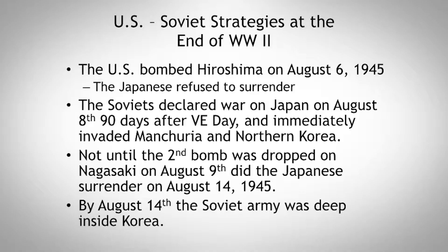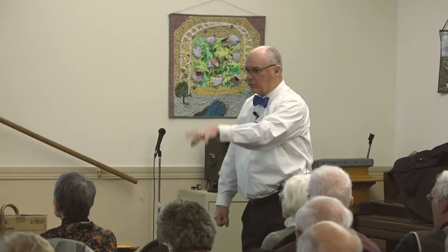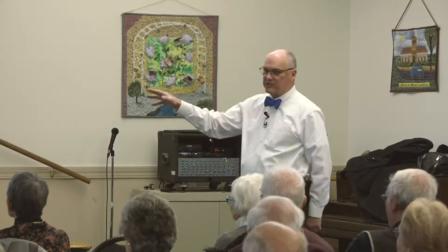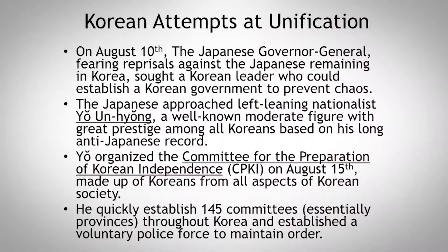U.S.-Soviet strategies: the U.S. bombed Hiroshima on August 6th, 1945. Japan did not surrender as quickly as expected. The Soviets declared war on August 8th — the 90 days after V-E Day — and immediately invaded Manchuria and North Korea. Not until the second bomb was dropped on Nagasaki on August 9th did Japan agree to surrender on August 14th, 1945. By August 14th, the Soviet Army was deep inside Korea.